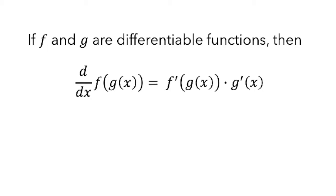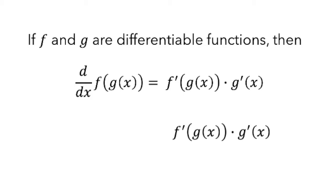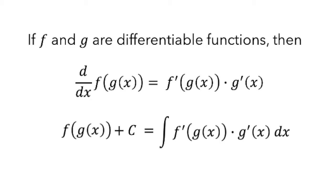The chain rule says that if f and g are differentiable functions, then the derivative of f(g(x)) is equal to f'(g(x)) times g'(x). We can think about integrating a composite function as doing the chain rule in reverse. Since the derivative of the left side equals the right side, the antiderivative of the right side should equal the function on the left side. This means doing the chain rule in reverse requires the integrand to be a product of a composite function and the derivative of its argument.